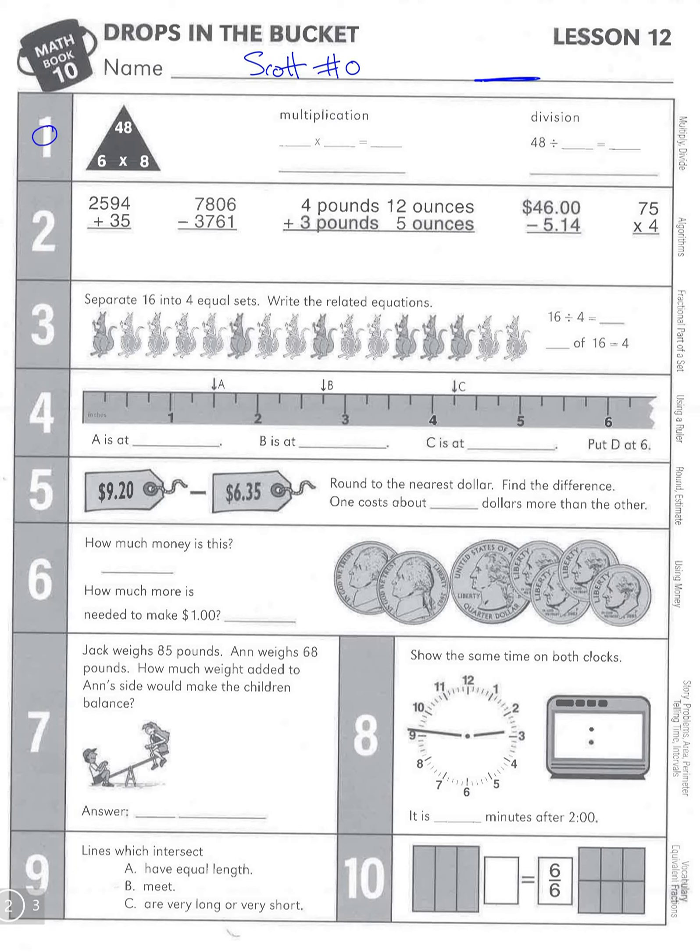Let's start with number one. We have a fact family triangle. We can start here with these factors: 6 times 8, and that's our product, 48. Or we could go the other direction—flip-flop those factors: 8 times 6, still our product is 48.